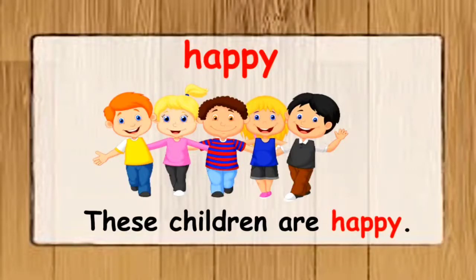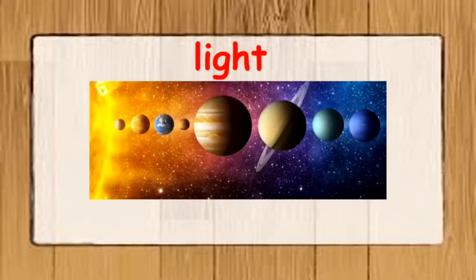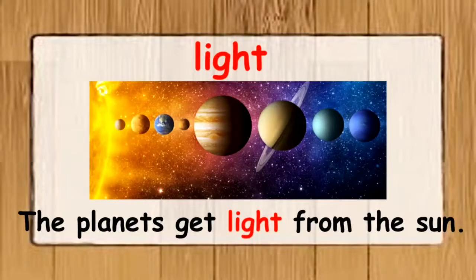The next word is light. What does light mean? Light is something which makes things visible. I have used the word light in a sentence: the planets get light from the sun. Planets don't have their own light — they get light from the sun.